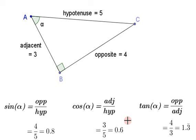The cosine is going to be 3 over 5, or 0.6, and the tan will be opposite over adjacent, which is 4 over 3, which gives us 1.3 repeating.